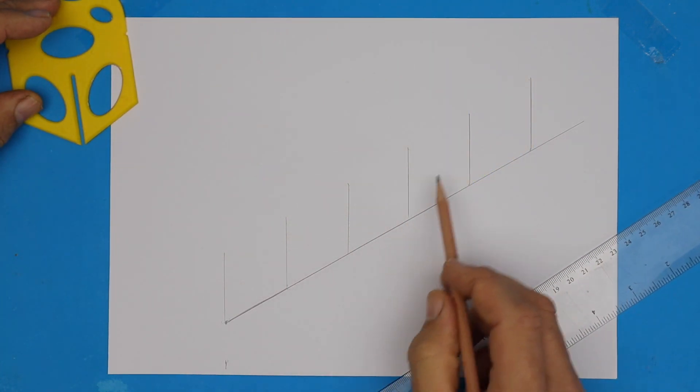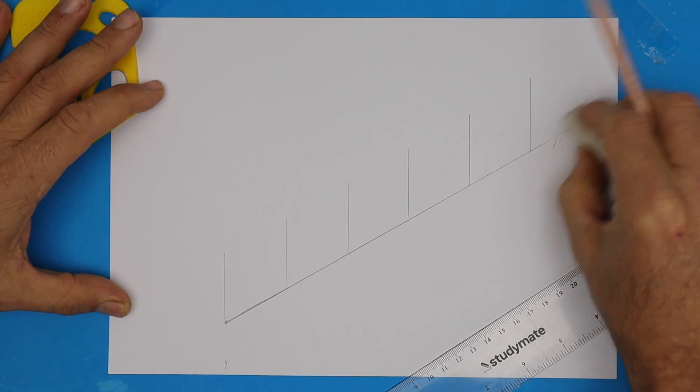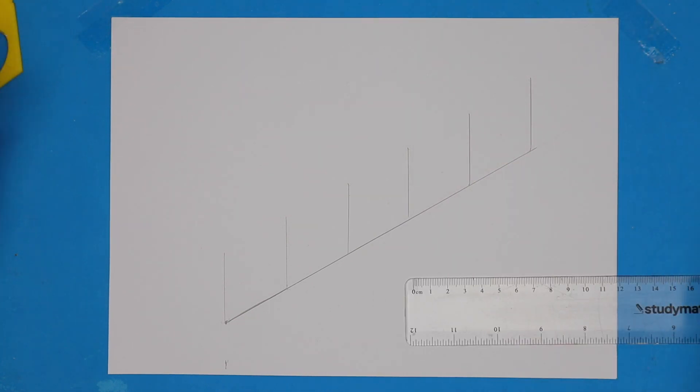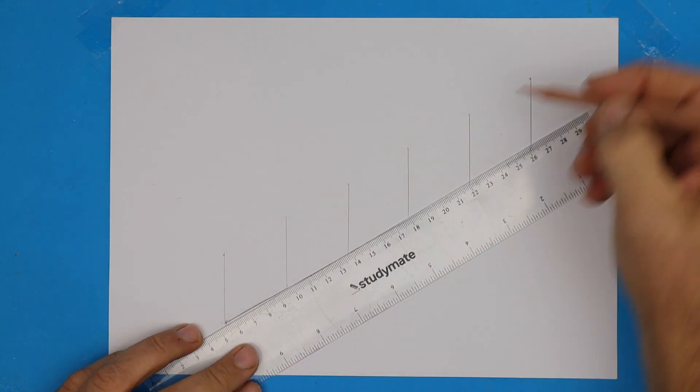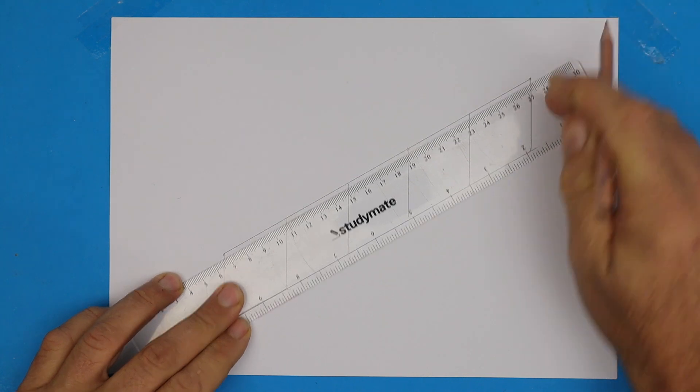Hang on, I better just check that. Looks good. Let's trim the line on the end and then we'll use a ruler to complete the top of all the boxes. So we're going to connect those two points. Boom. Great.